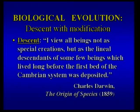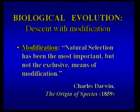What Darwin meant by that is, first of all, descent: he viewed all beings not as special creations, but as lineal descendants of some few beings that lived in the distant past. Modification, Darwin felt, was due primarily, though not exclusively, to natural selection — or survival of the fittest — which acted on random variations in a population to change it.